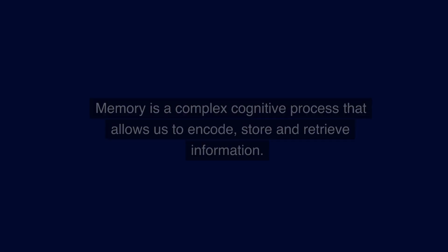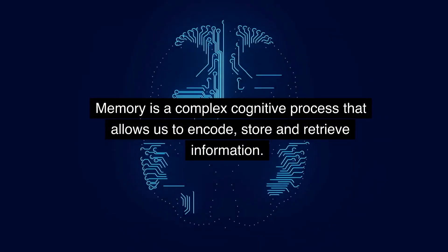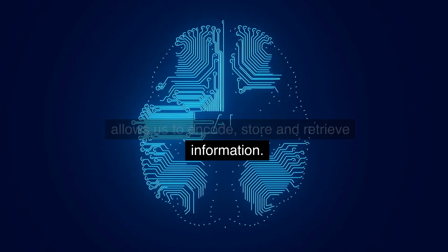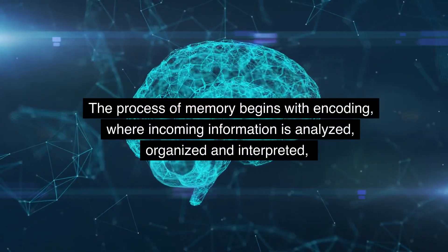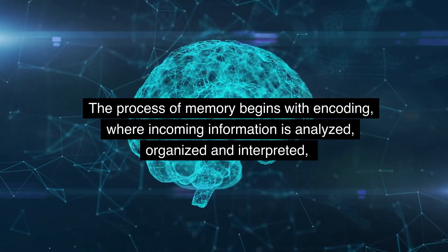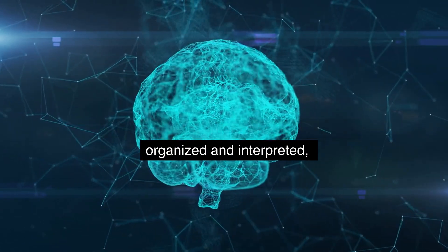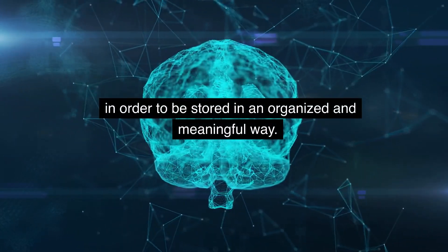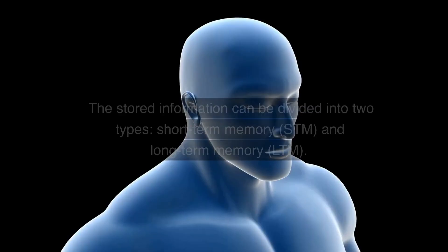How memory works. Memory is a complex cognitive process that allows us to encode, store and retrieve information. The process of memory begins with encoding, where incoming information is analyzed, organized and interpreted, in order to be stored in an organized and meaningful way.